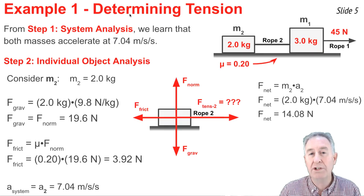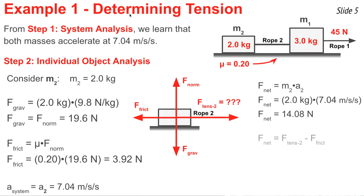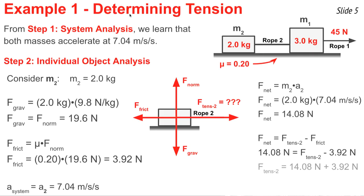The net force equals the forward force minus the backward force, so F-net equals the tension in rope two minus the friction force. Substituting in 14.08 Newtons for F-net and 3.92 Newtons for friction, I solve for tension in rope two by adding 3.92 Newtons to both sides, giving 18 Newtons for the force in rope two.